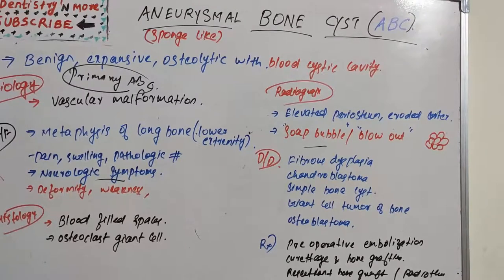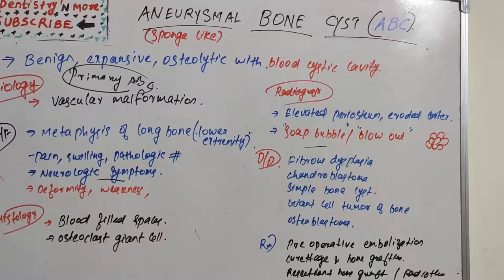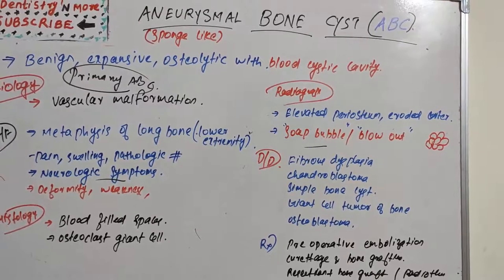Differential diagnosis of ABC includes fibrous dysplasia, chondroblastoma, simple bone cyst, giant cell tumor of bone, and osteoblastoma.